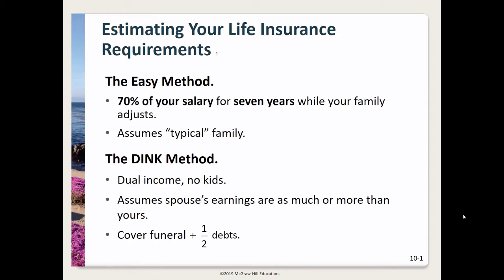For a simple estimate, you take your gross income and multiply by seven years at 70%. The DINC method is for dual income, no kids families, and it assumes that your spouse's earnings are as much or more than yours. You take all of your debts, divide by half, and then add in funeral costs.